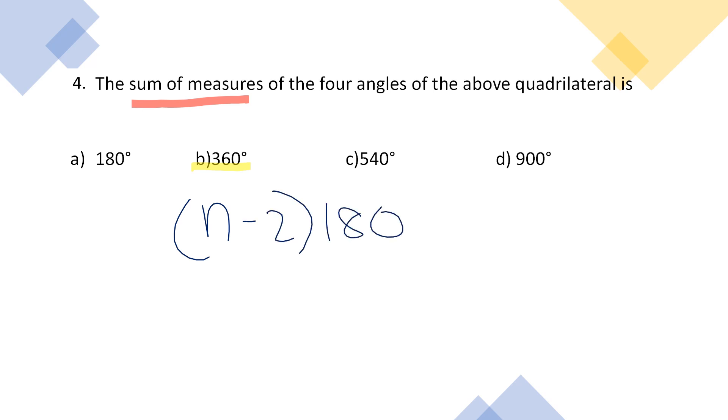That is N minus 2 into 180. We know that the previous shape, which was a parallelogram, had four sides. N means the number of sides. So 4 minus 2 into 180, that is 2 into 180, which equals 360.